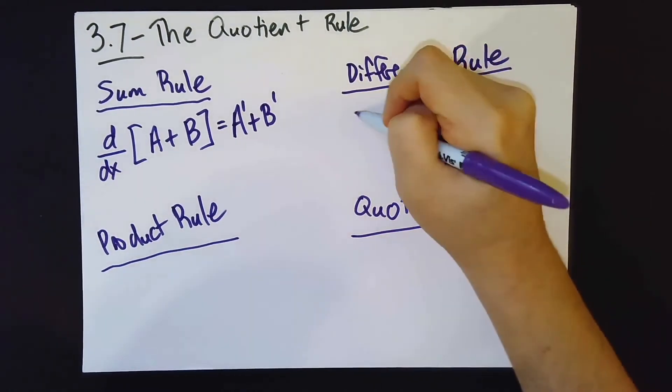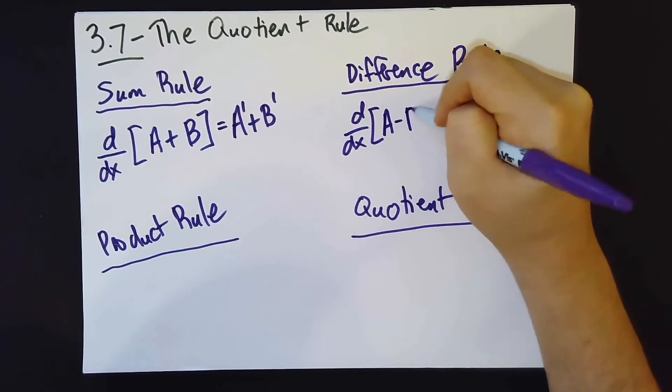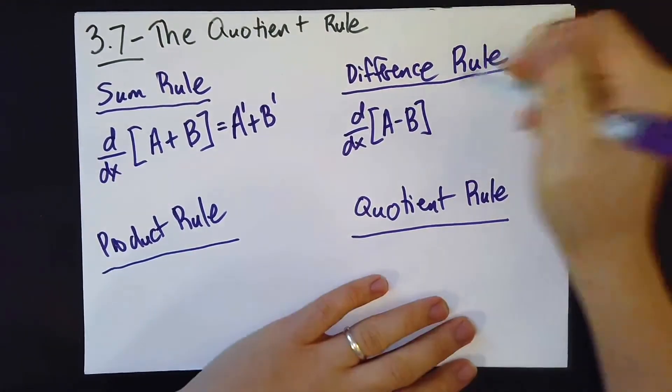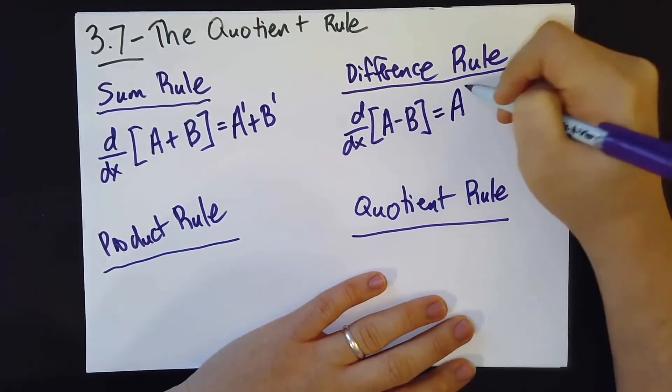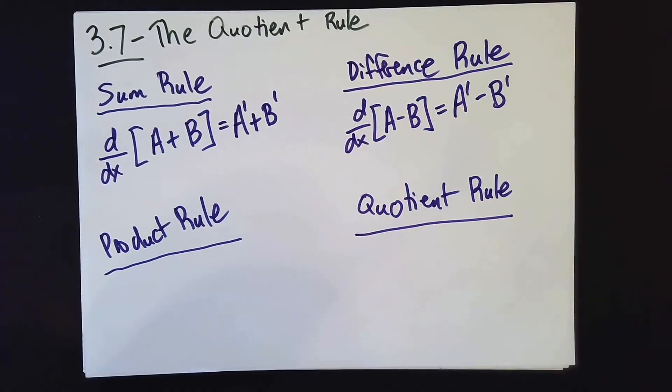What if you have the derivative of thing a minus thing b? Well, the difference rule tells us you get the derivative of a minus the derivative of b. That was what we knew after section 3-5. Everything worked out pretty nicely.